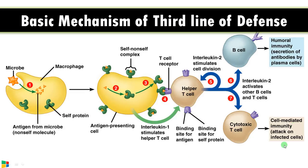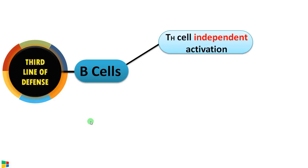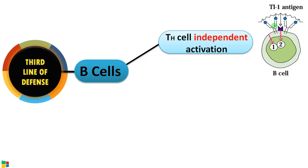This is the basic mechanism by which the third line of defense works. The players are B cells and T cells, along with antigen presenting cells like macrophages, dendritic cells, and B cells. There are two methods by which B cells work. The first is T helper cell independent activation. The antigen that induces this type of activation is called a thymus independent antigen. Often this antigen has identical epitopes — as you can see, these epitopes are the same — and they can cross-link the receptor, causing activation of the B cell directly without involvement of T helper cells.